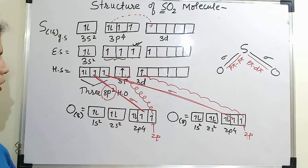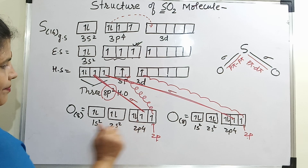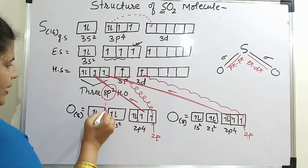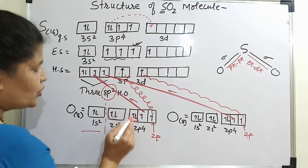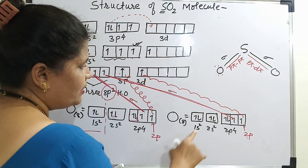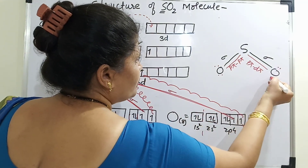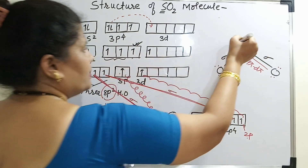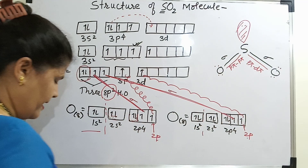This is how the molecule is formed. If I see oxygen here, how many lone pairs are there? This is a non-bonding electron — so one electron pair, second electron pair. There are two lone pairs on oxygen. Same here — two lone pairs on the second oxygen, and one lone pair on sulfur.